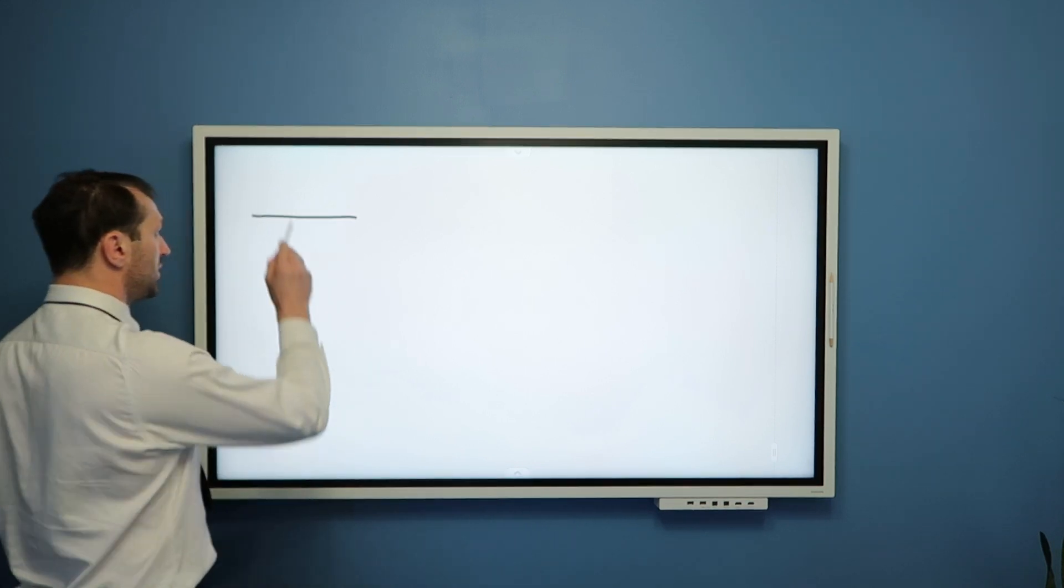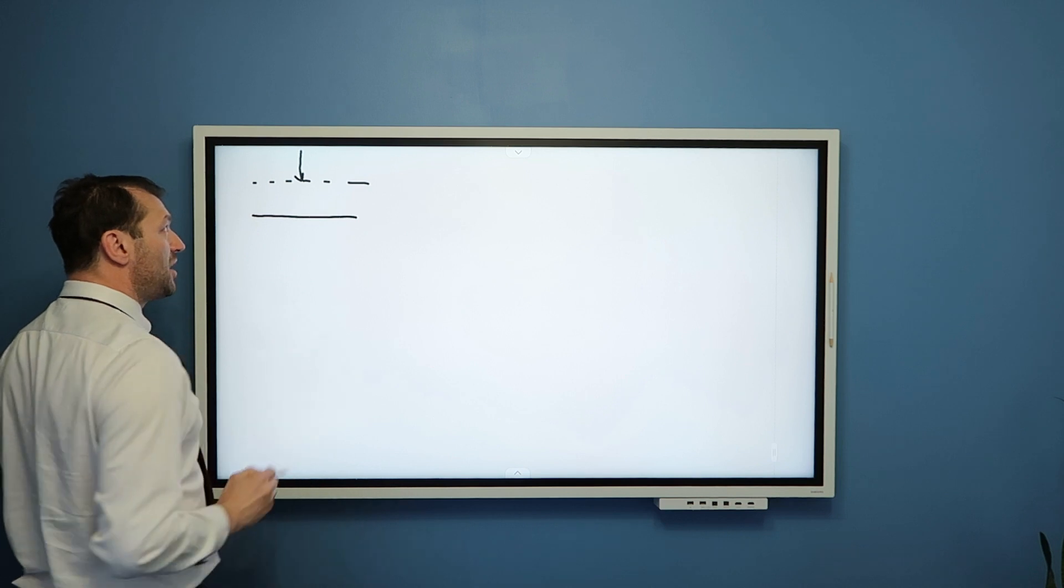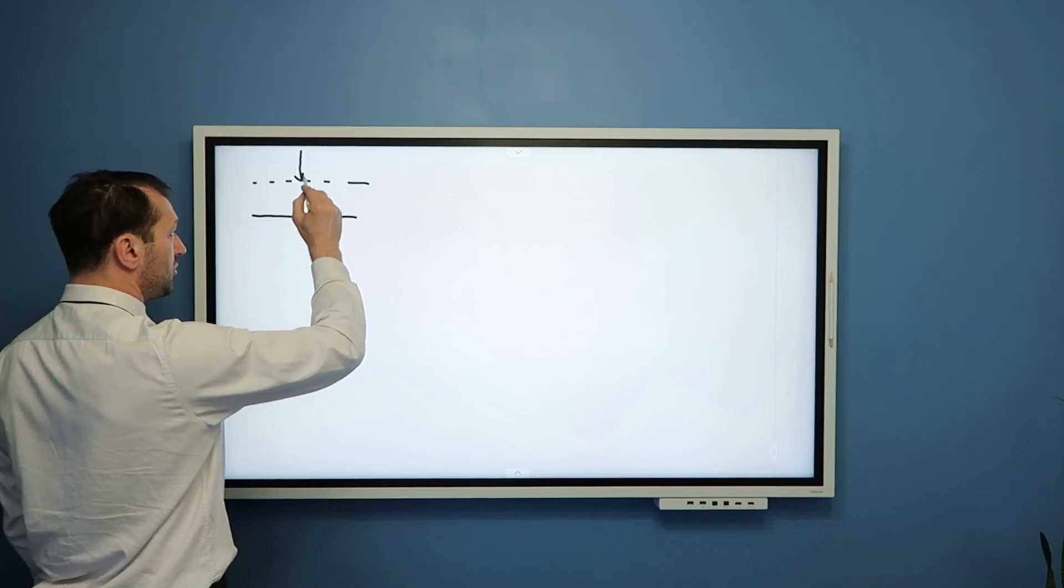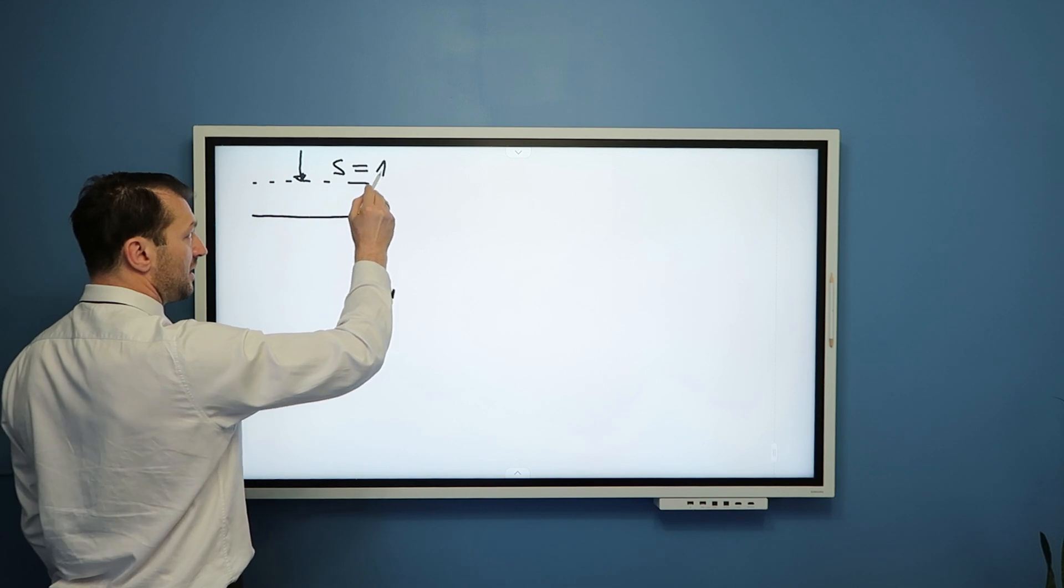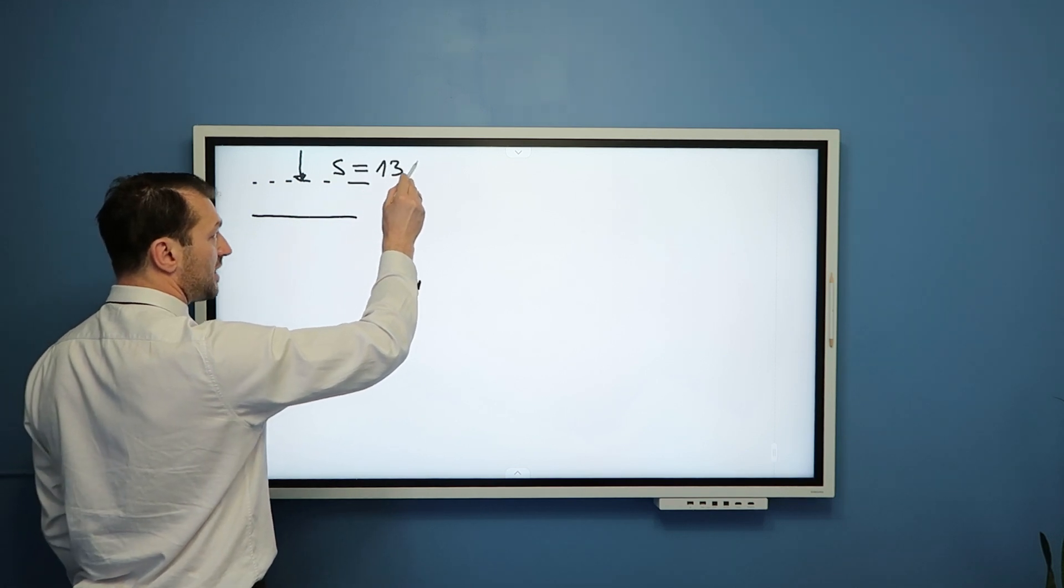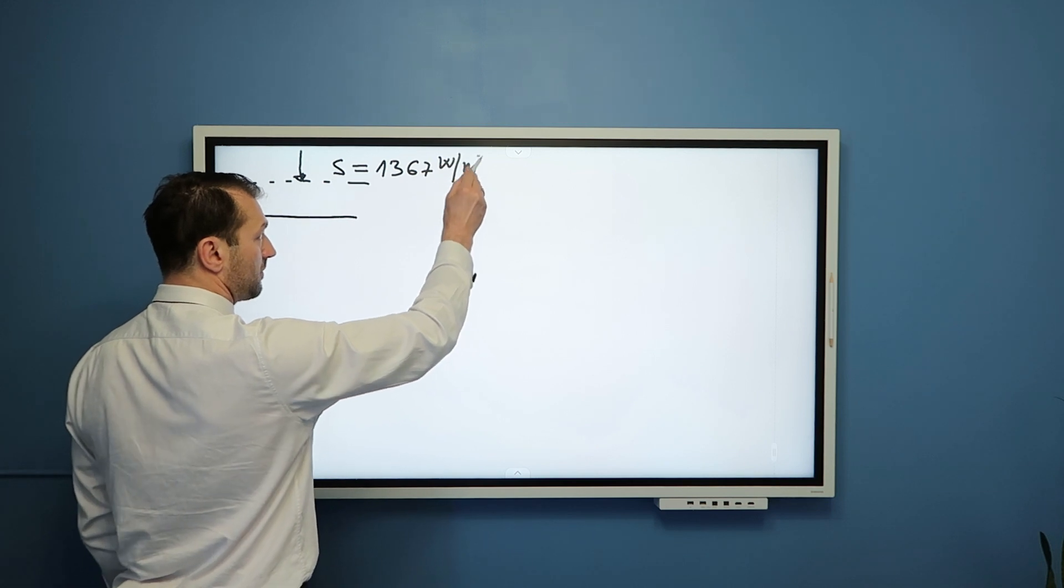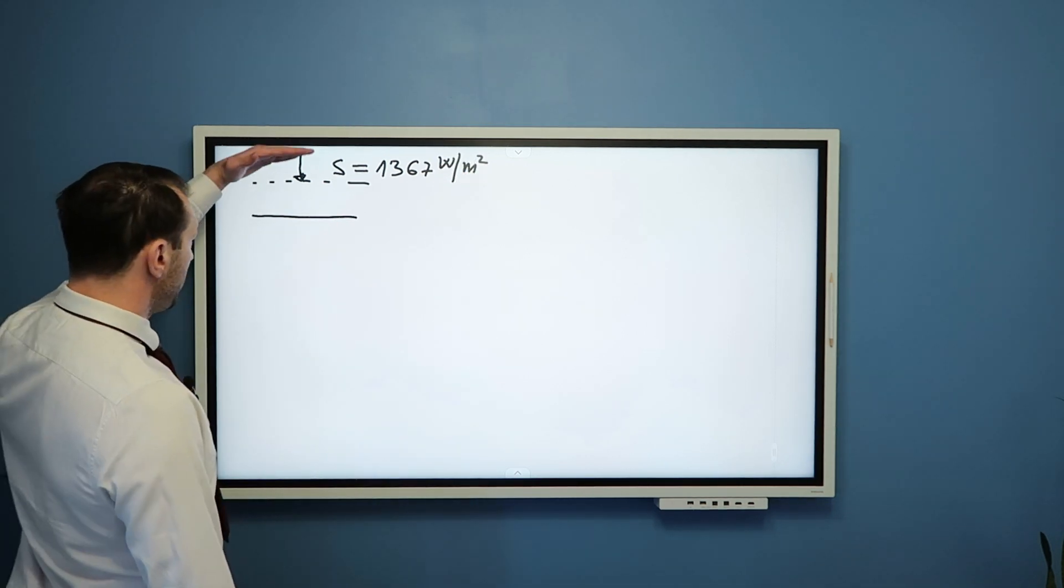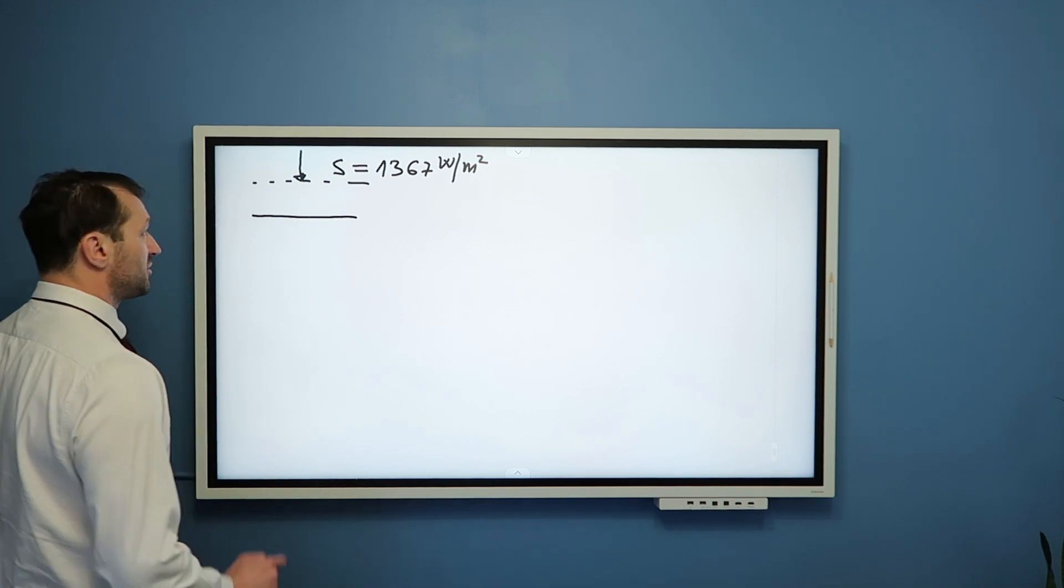In the last video we saw that if this is the surface of the Earth and here is the top of the atmosphere, the amount of radiation reaching the top of the atmosphere equals solar constant S, approximately 1367 watts per square meter. And now we need to examine what is happening with this radiation once it enters the Earth's atmosphere.